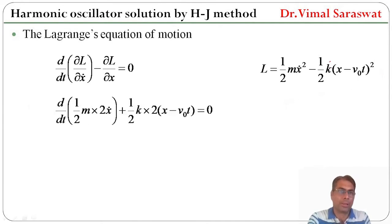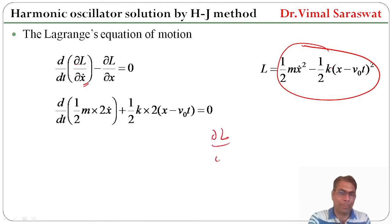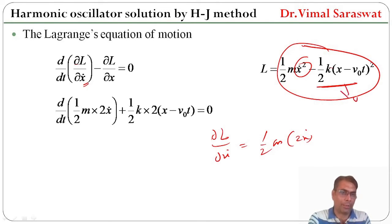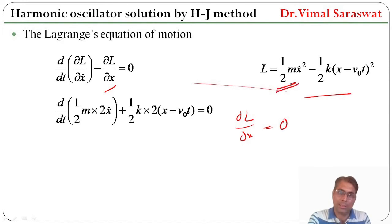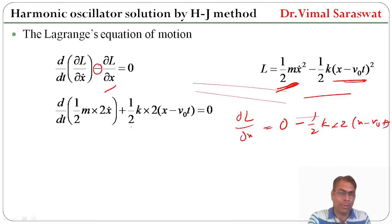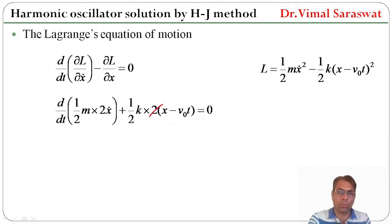If we differentiate L with respect to x dot partially, then ∂L/∂x dot equals half m times two x dot, which gives m x dot. Also, if we find ∂L/∂x, then ∂L/∂x equals zero from the kinetic term, minus half k times two times (x minus v₀t), and the halves cancel, giving plus k times (x minus v₀t).